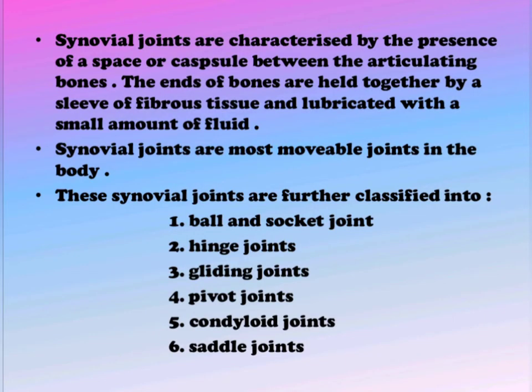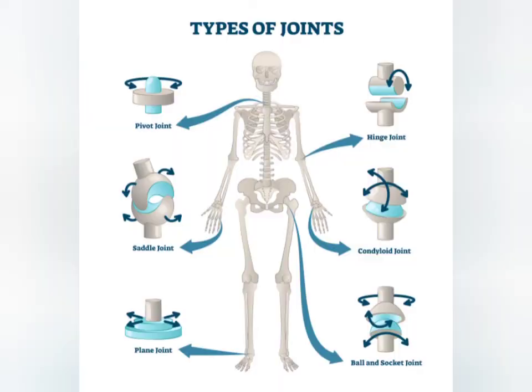A condyloid joint has a smooth rounded projection on a bone that sits within a cup shaped depression on another bone. Examples include the joint between the condyloid process of the mandible and the temporal bone.